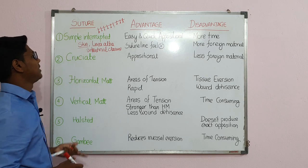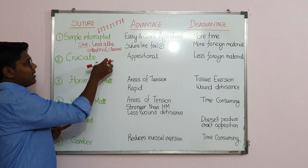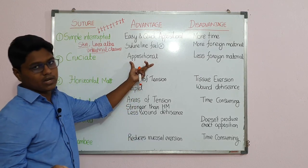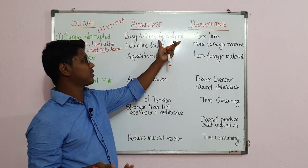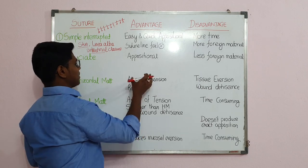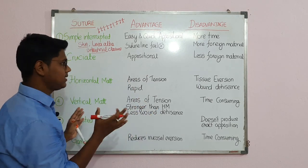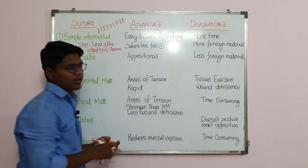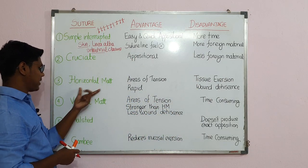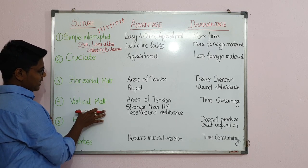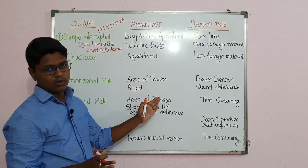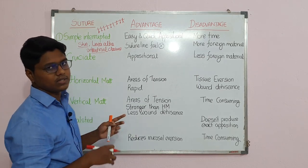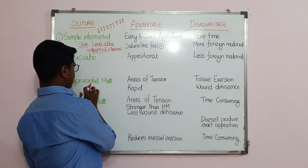The cruciate pattern is used similarly to the simple interrupted — for skin closure and linea alba — but it is not used in intestinal closures. The cruciate is an oppositional suture. Compared to the simple interrupted, there will be less foreign material and fewer sutures used. The mattress patterns — both horizontal and vertical — are basically used in areas of tension; they are tension-relieving sutures.